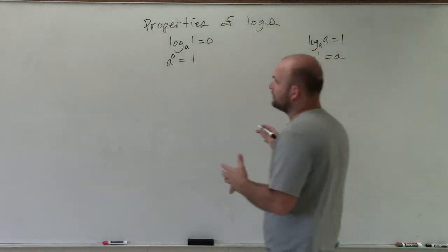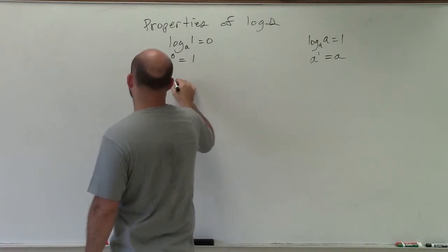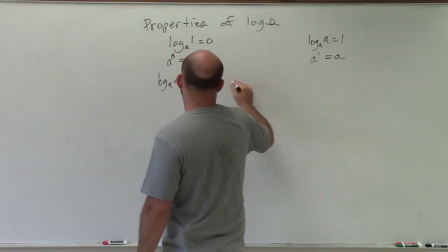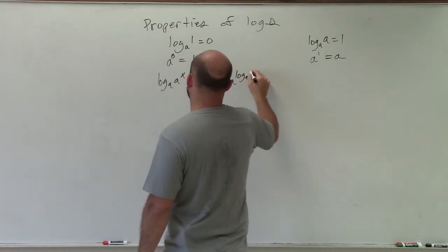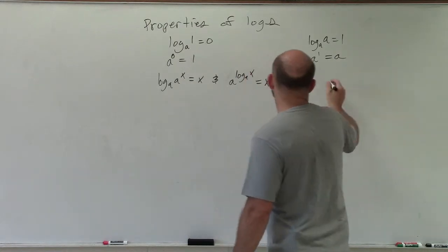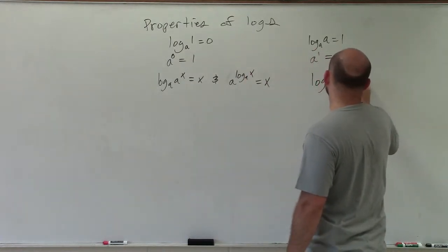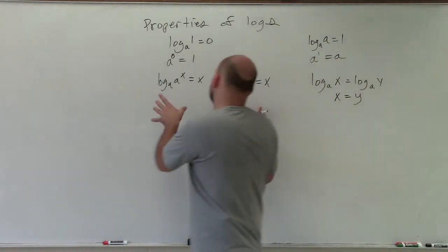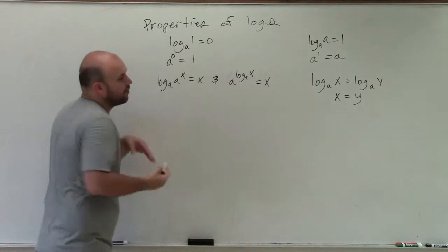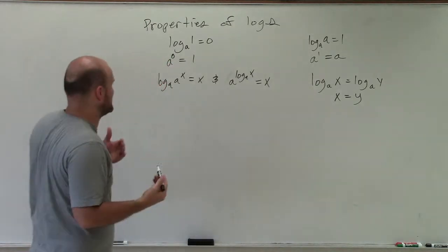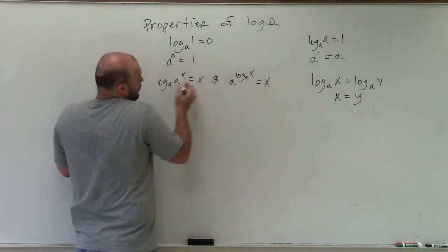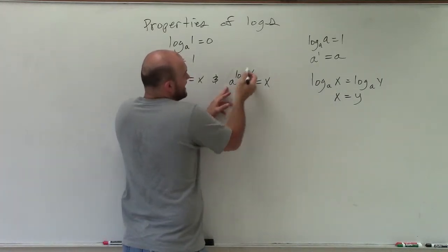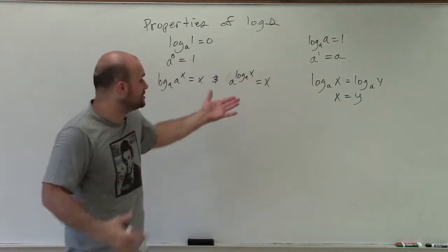The next couple of properties will also help with solving. The first is log base a of a to the x equals x. And a to the log base a of x equals x. These are inverse properties — the log raised to that exponent of x just equals x. You can also look at it as a raised to log base a: they pretty much undo each other and equal x.